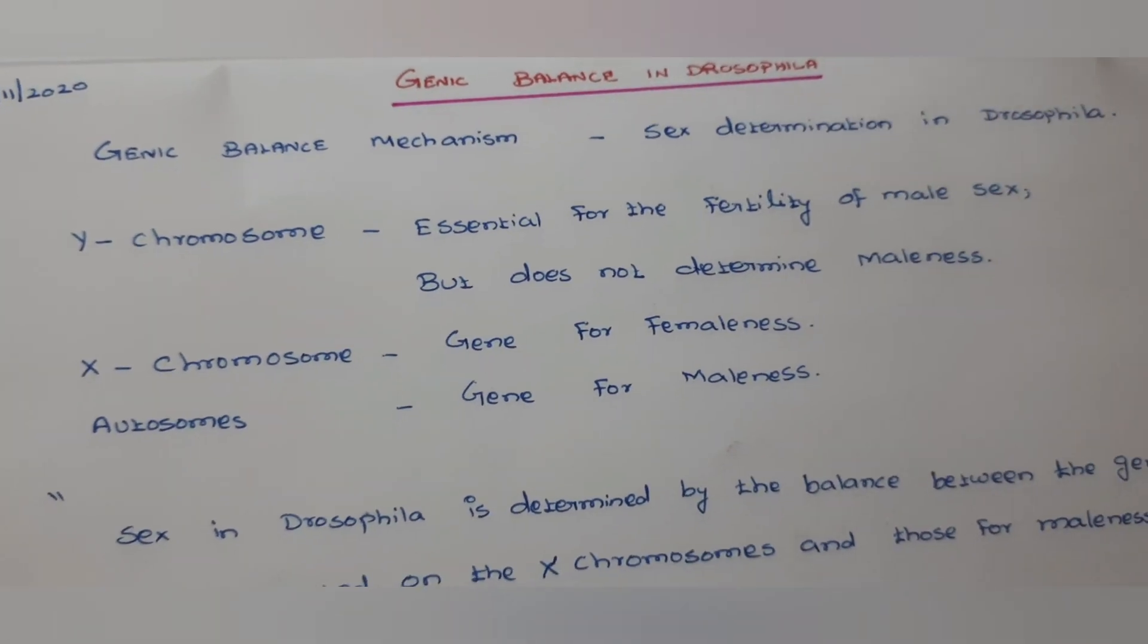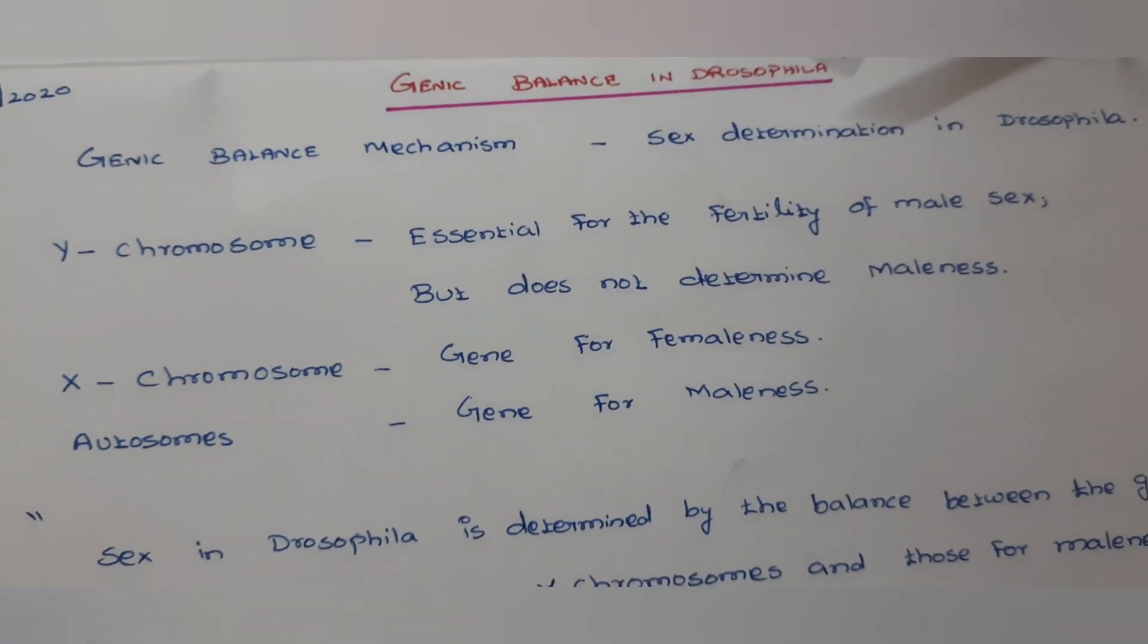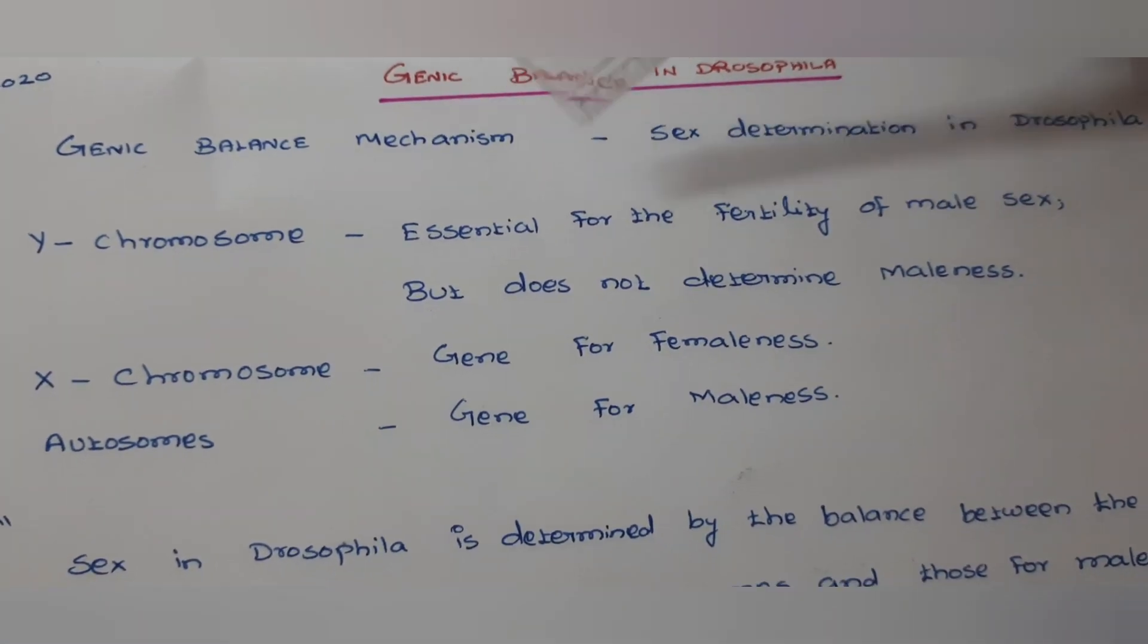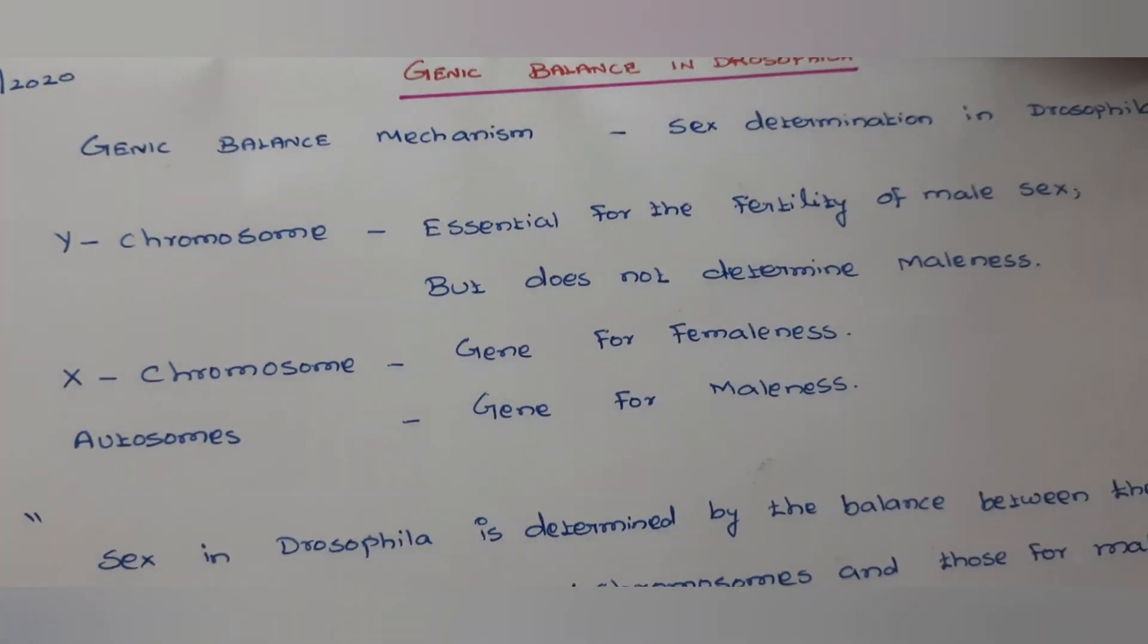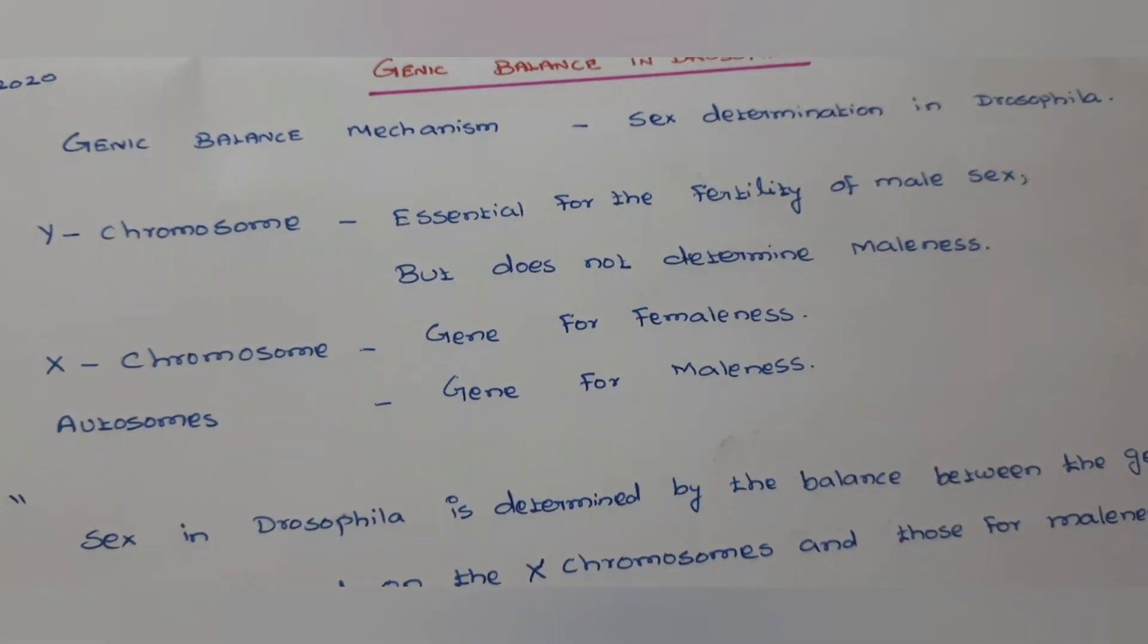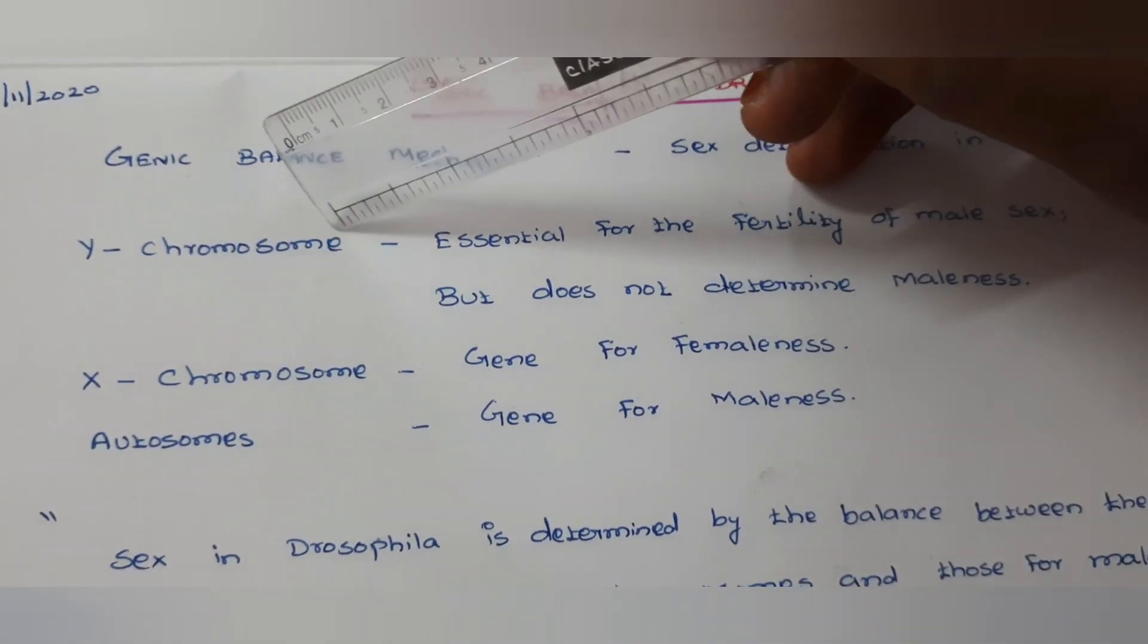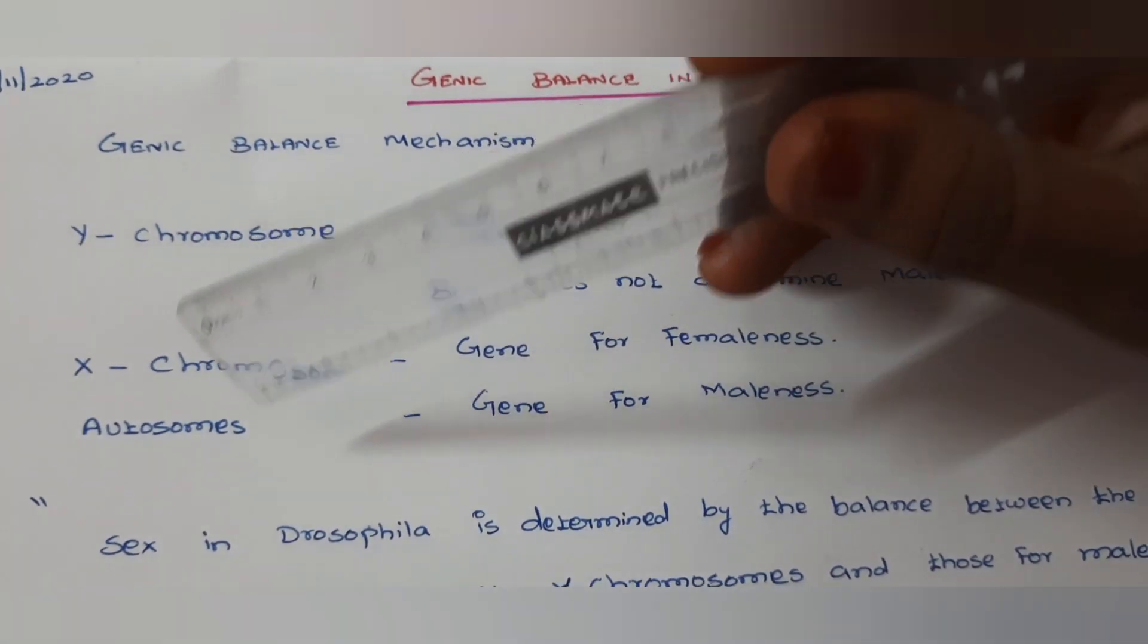Genic balance is nothing but how sex is determined in Drosophila through genes. We are going to study that concept. The gene is present on chromosomes. Now you see there are three chromosomes are given: Y chromosome, X chromosome, and autosomes.